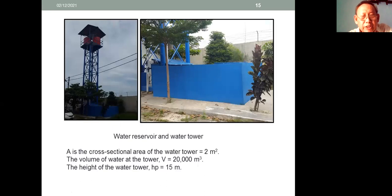This picture is about water reservoir and water tower. A is the cross-sectional area of the water tower, around 2 meters squared, and the volume of water at the tower is 20,000 meters cubed. The height of the water tower HP is 15 meters.